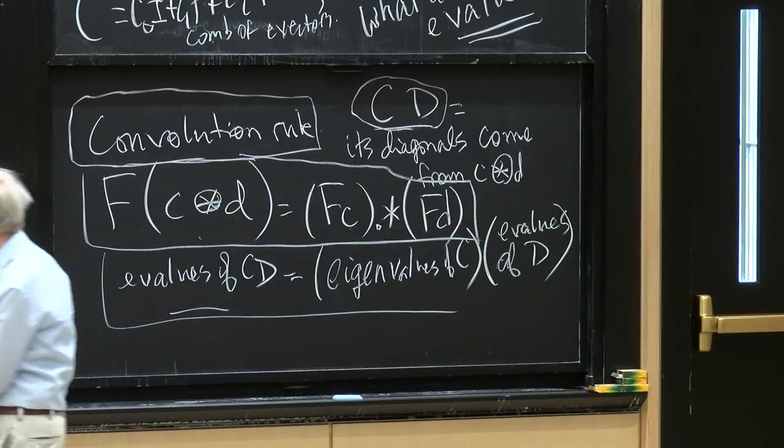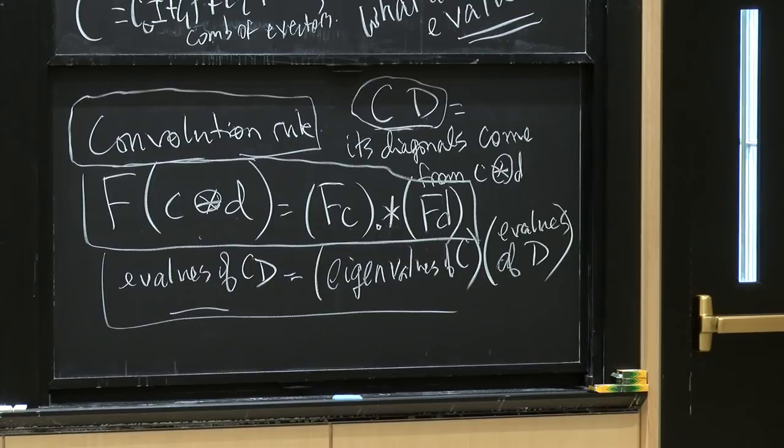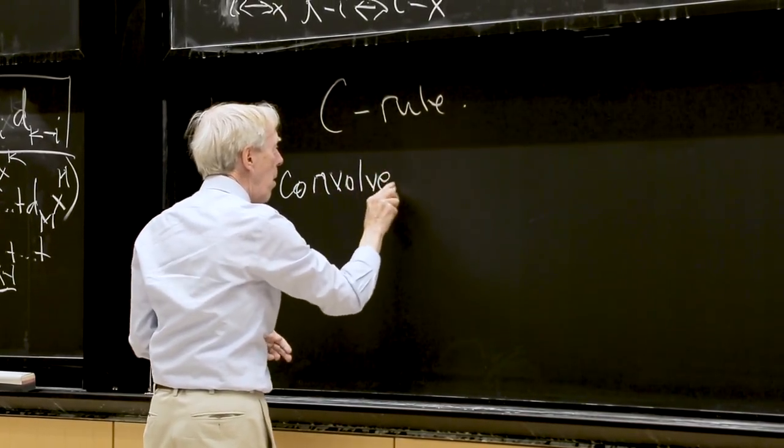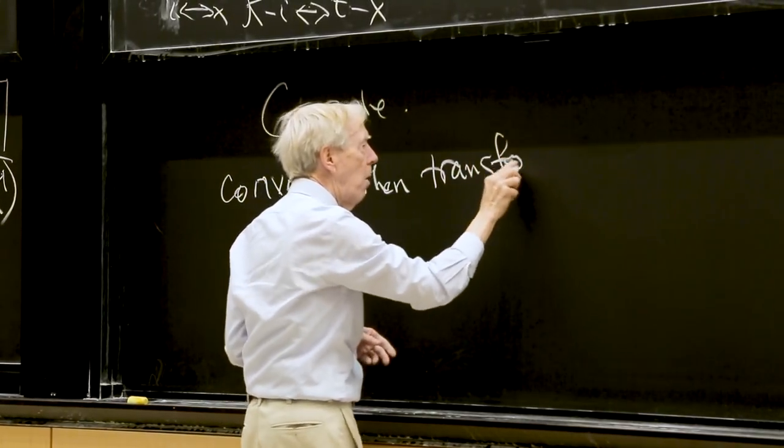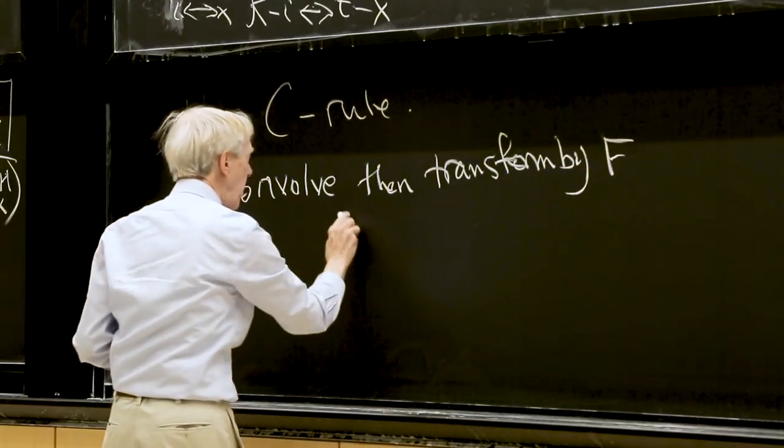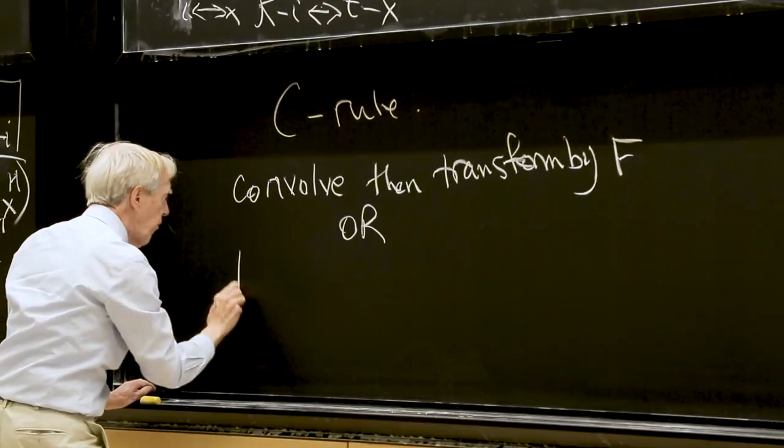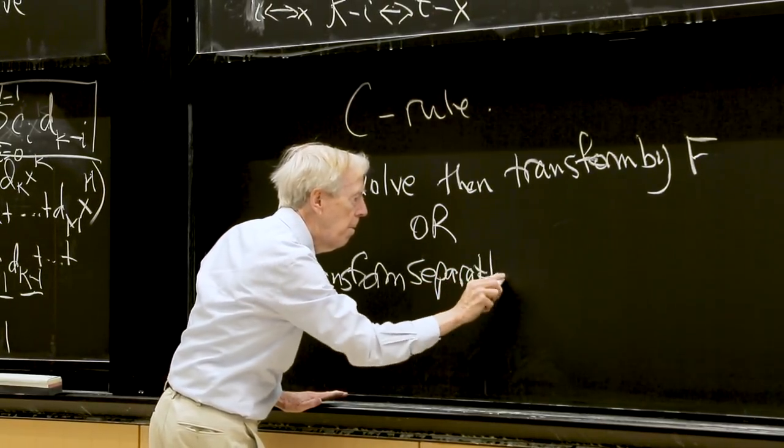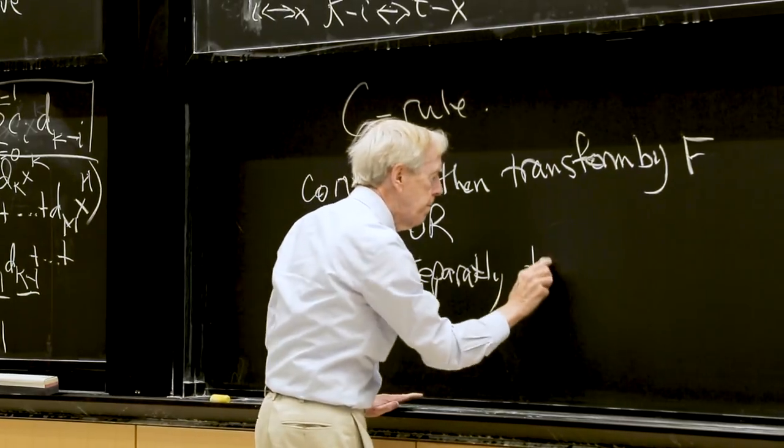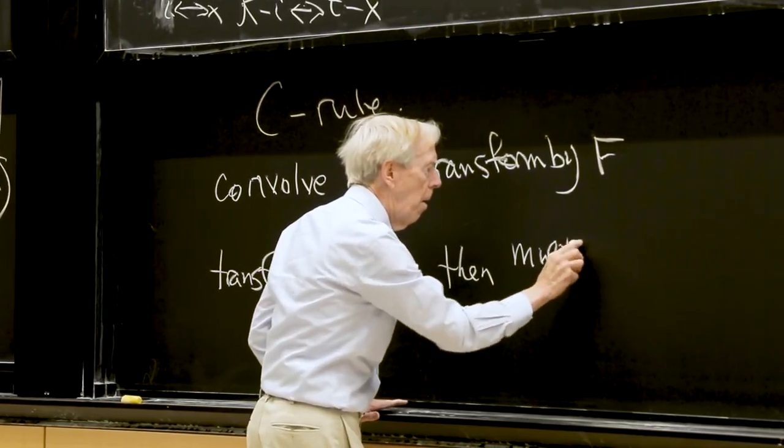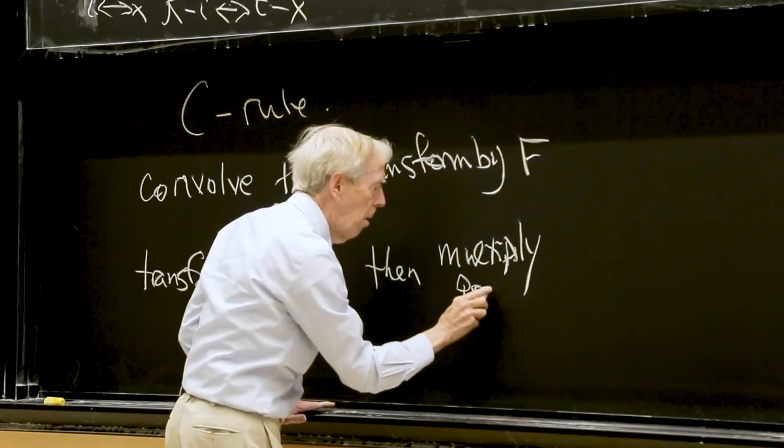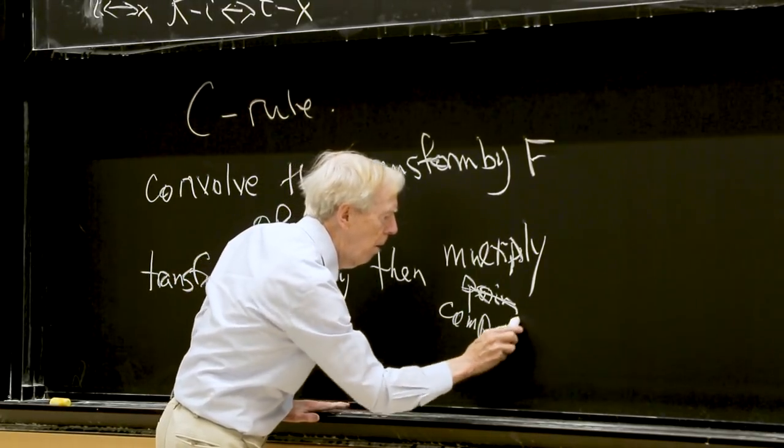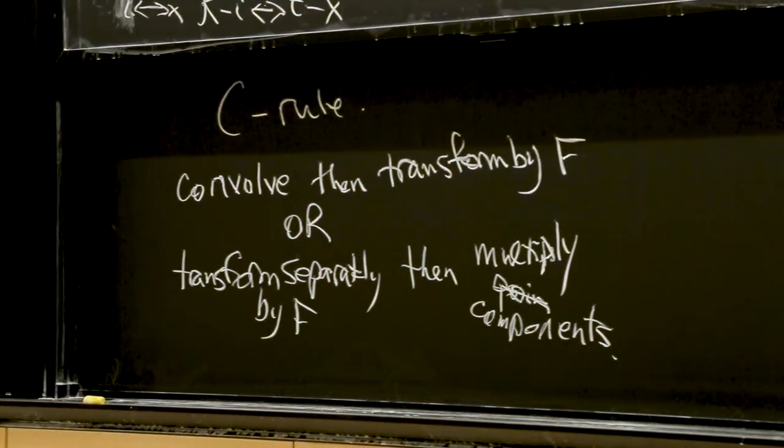Yeah, yeah. So this is the convolution rule. That's the convolution rule. And the proof is the fact that when matrices commute, the eigenvalues of the product are just these eigenvalues times these eigenvalues because they have the same, the eigenvectors are always the same here for all these circulants. So there's the convolution rule that I can convolve and then transform, or I can transform separately and then multiply. So I just maybe better write that, the convolution rule. Let's call it the C rule. Convolve, then transform by F, or transform separately by F and then multiply pointwise. Yeah, element by element, yeah. Component by component.